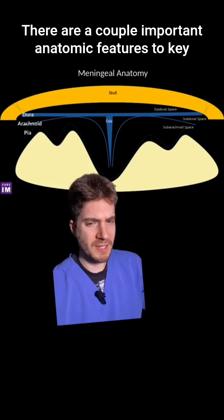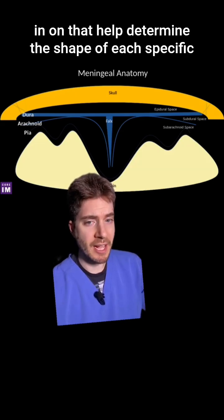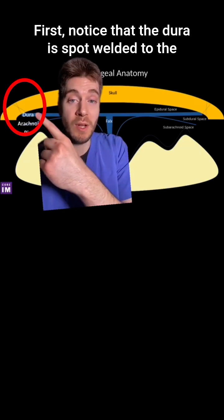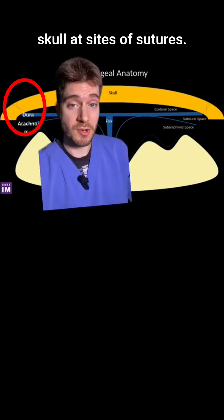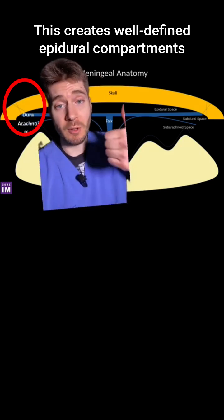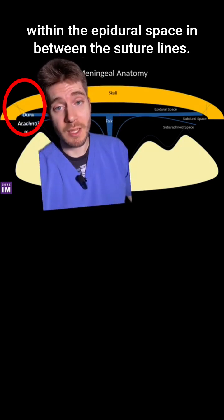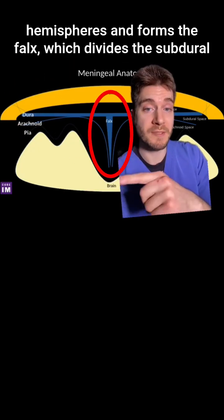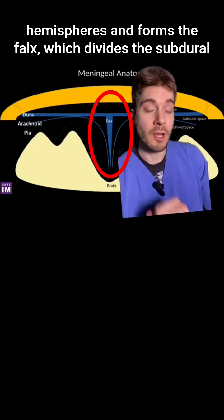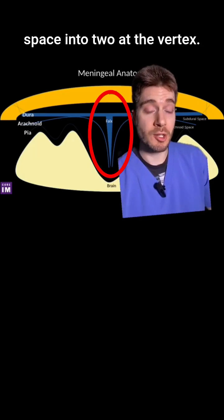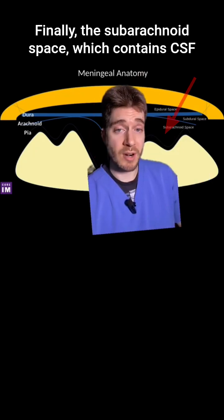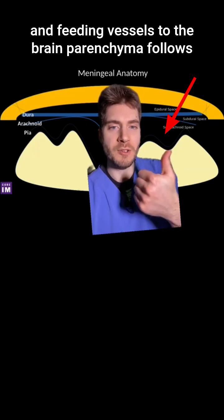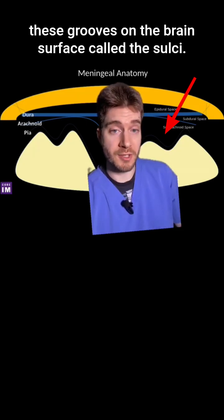There are a couple of important anatomic features to key in on that help determine the shape of each specific type of hemorrhage. First, notice that the dura is spot-welded to the skull at sites of sutures, creating well-defined epidural compartments within the epidural space between these sutural lines. Second, notice how the dura dives in between the cerebral hemispheres and forms the falx, which divides the subdural space into two at the vertex. Finally, the subarachnoid space, which contains CSF and feeding vessels to the brain parenchyma, follows the grooves on the brain surface called the sulci.